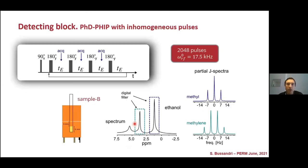Before going to the hyperpolarized sample, we need to test the train of refocusing pulses by itself because we now will apply thousands of inhomogeneous pulses. So we place ethanol in the sample B configuration. We perform two different trains of refocusing pulses with digital filters centered at each of the functional groups of the ethanol, the methyl and methylene. And we obtain this partial spectra free of artifacts in a really good accordance with what we expected.